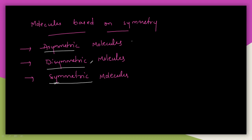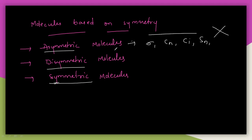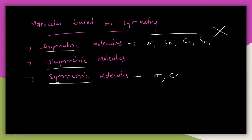Asymmetric is nothing but the absence of symmetry — it is not having any sigma (σ), Cn, Ci, or Sn. If none of these exist, then it is an asymmetric molecule. In the case of symmetric molecules, it will have sigma, or Cn, Ci, or Sn — if those exist, then it is symmetric.